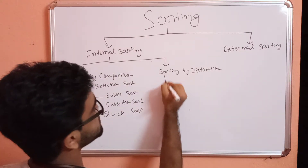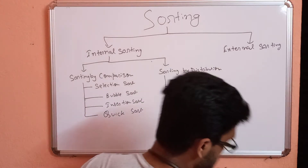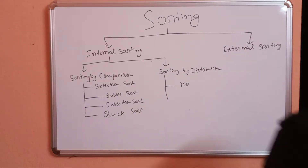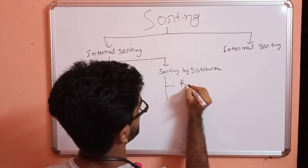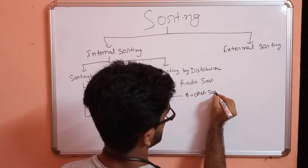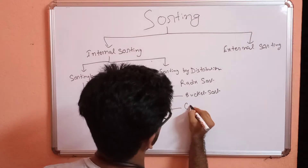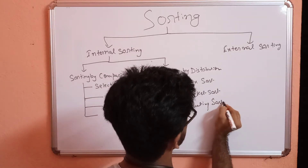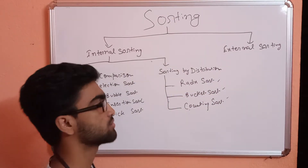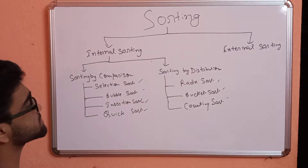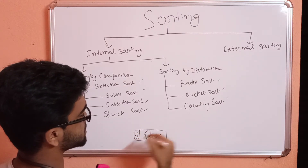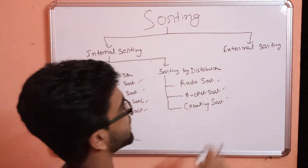Sorting by distribution techniques include: radix sort, bucket sort, and counting sort. These techniques distribute the elements first, then sort accordingly. In contrast, sorting by comparison techniques compare each element with the others and then sort.